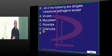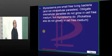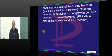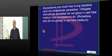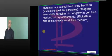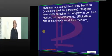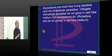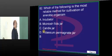Obligate intracellular — that is everything except mycoplasma. Mycoplasma is the smallest free-living organism and can grow on a cell-free medium. Generally, obligate intracellular parasites cannot, but mycoplasma can. Whereas Rickettsiae also do not grow in cell-free medium — is what need to be remembered.